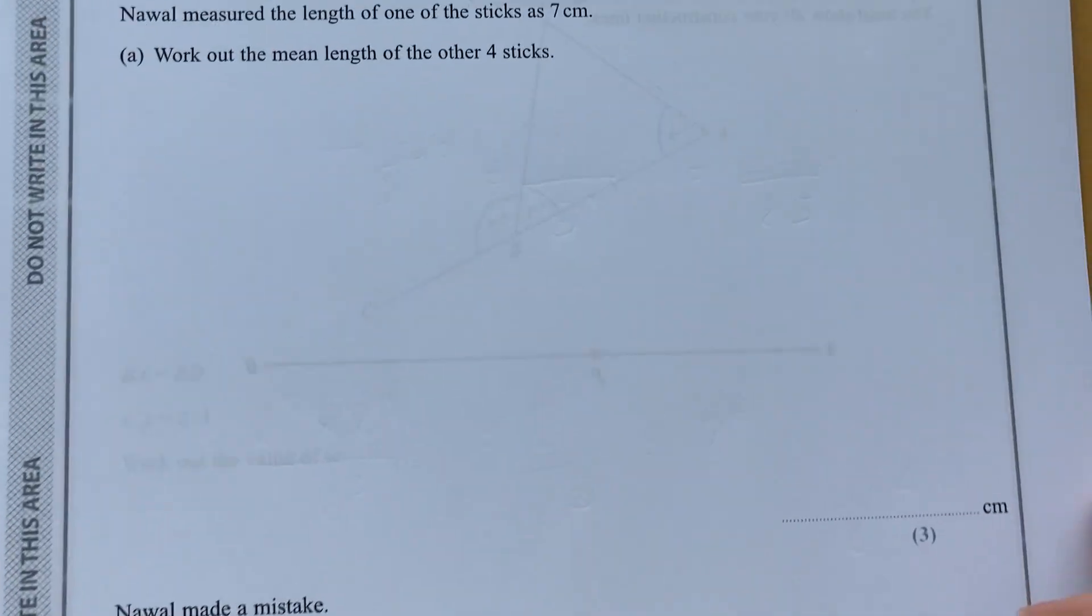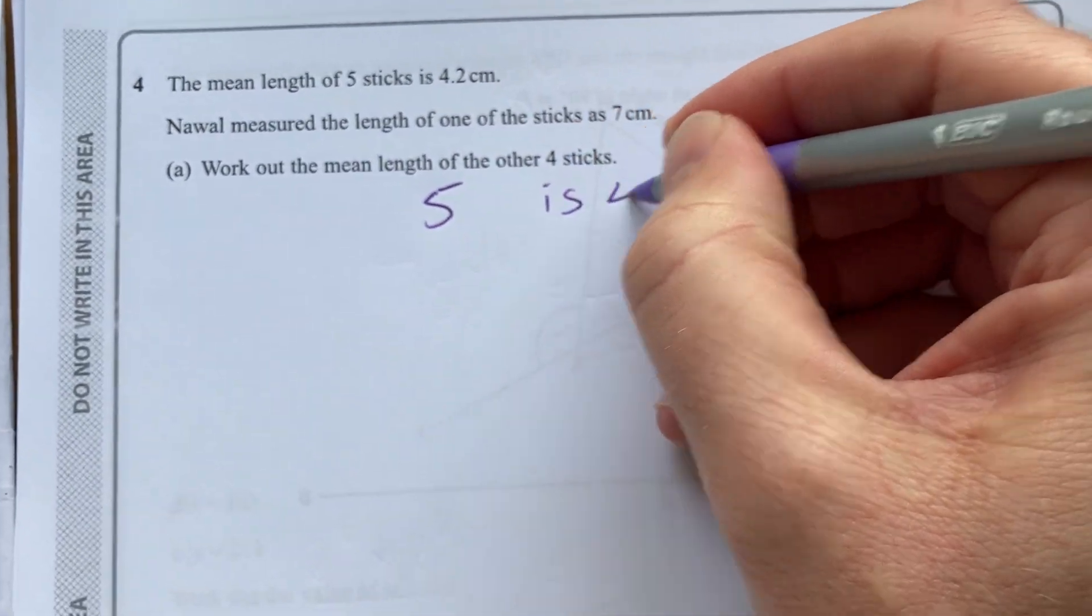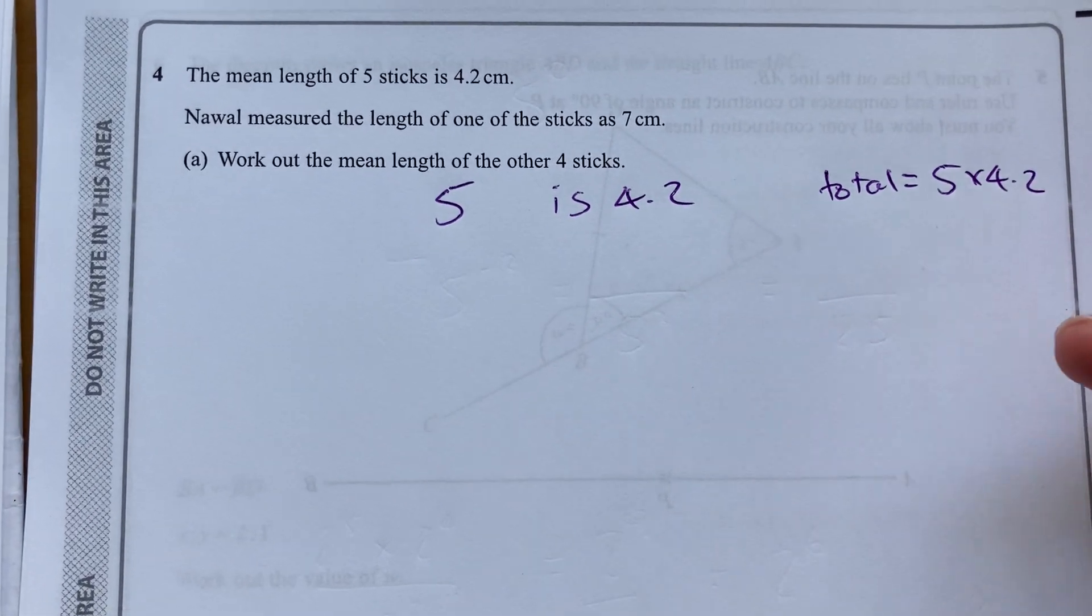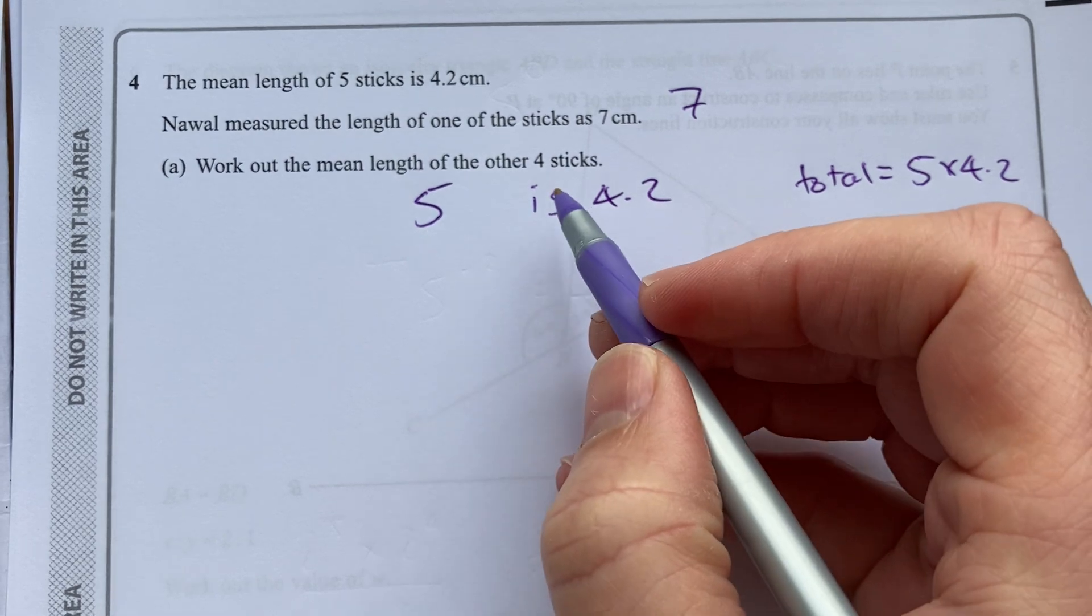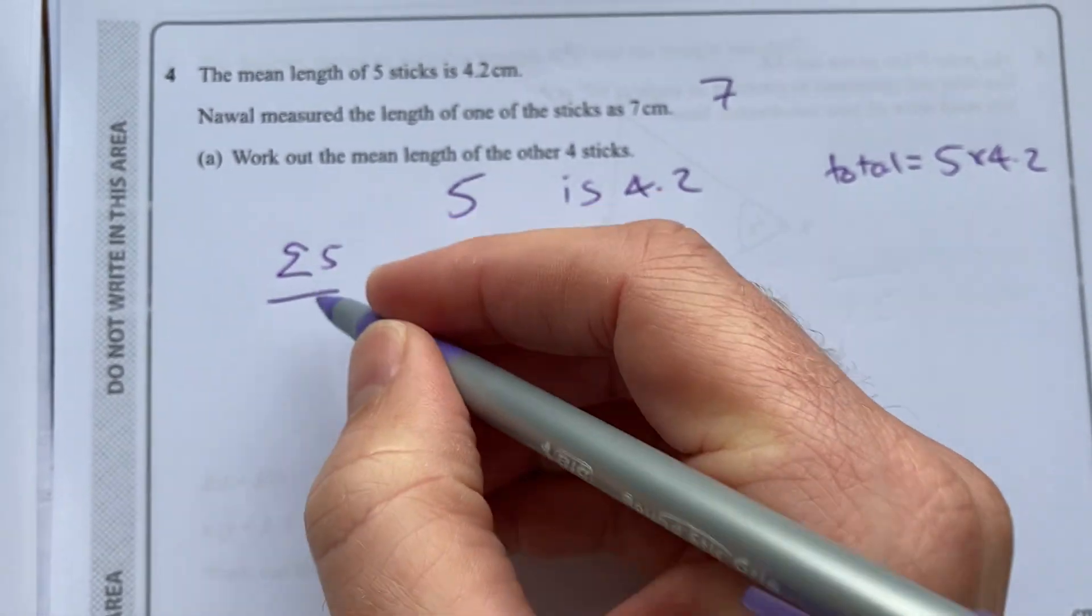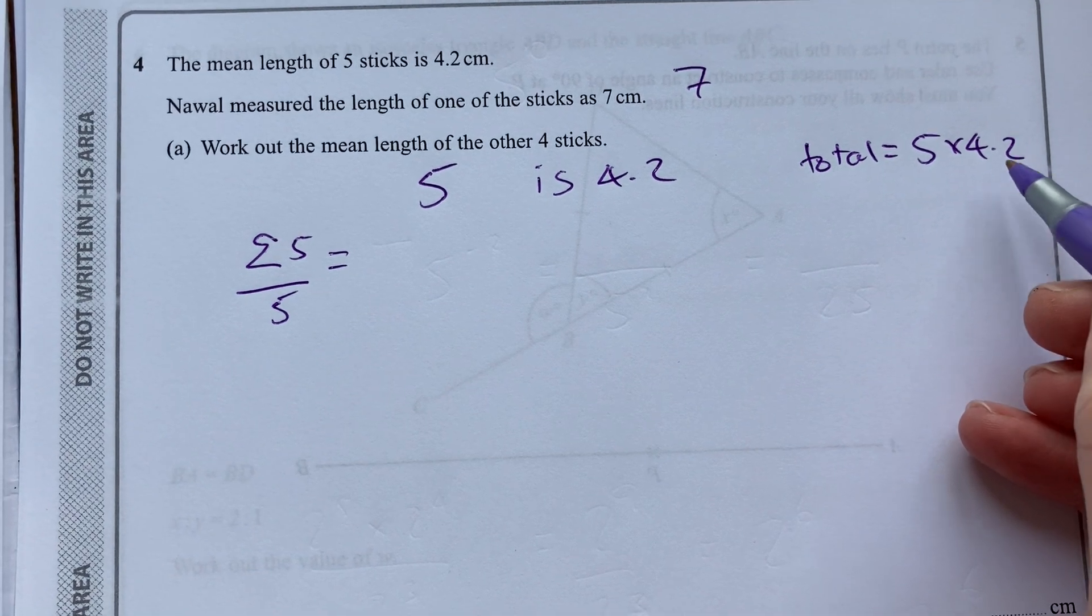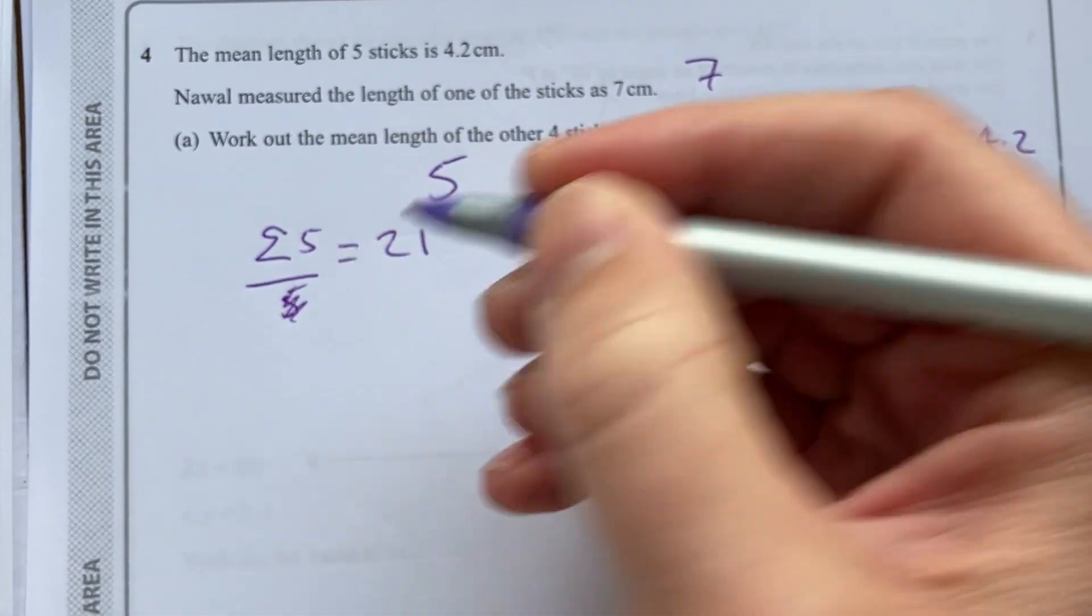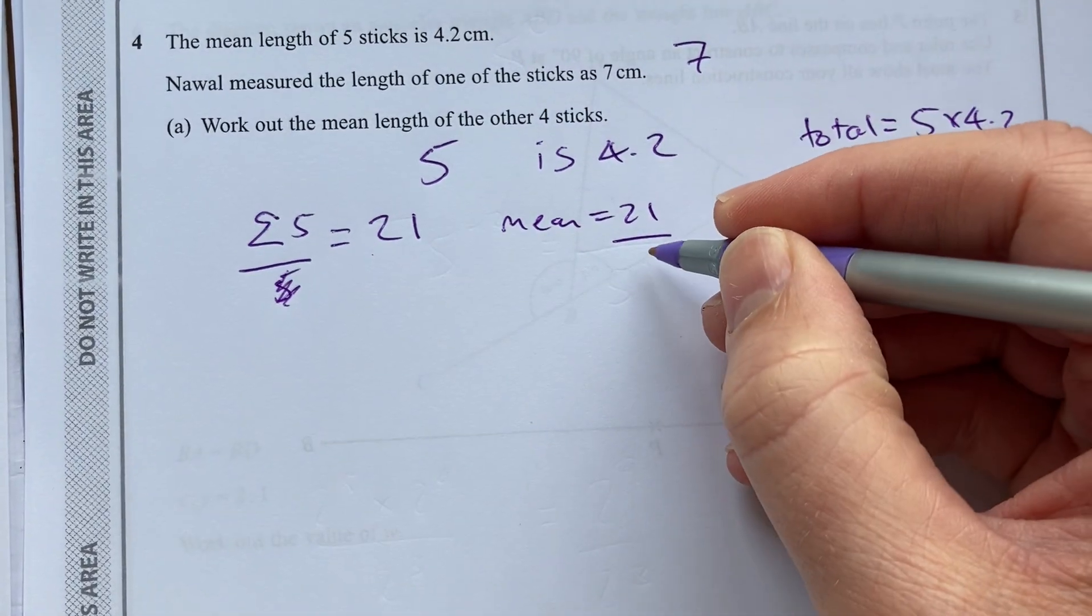Let's move on to question 4 now. The mean length of 5 sticks is 4.2. So I know that the total is 5 times 4.2. Now while I measure the length of one of the sticks as 7 centimeters, work out the mean length of the other four. So I know that if I sum those 5 and divide by 5, I'm going to get 5 times 4.2, which is 20 plus that one, 21 in total.